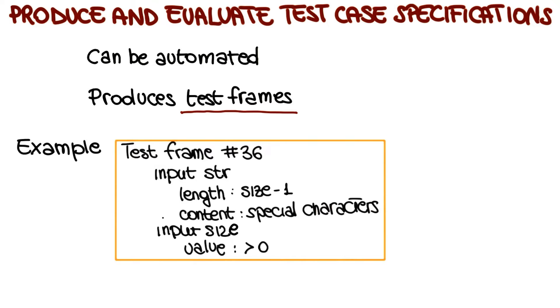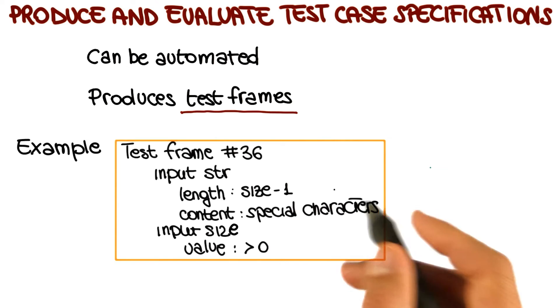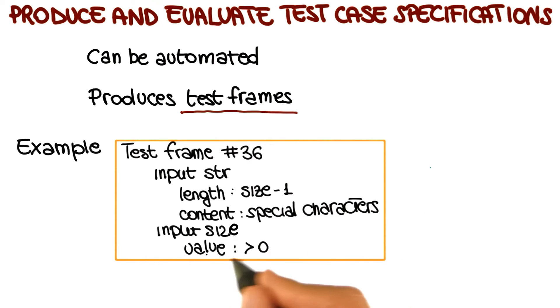In this case, since we have two inputs, we have two entries. The first one, for string str, tells us that the length of the string has to be size minus one, and that the string has to contain special characters. And for size, it tells us that the value of size has to be greater than zero.